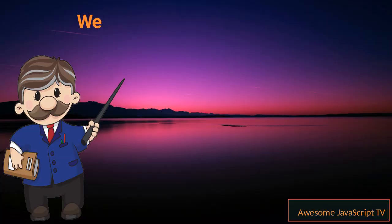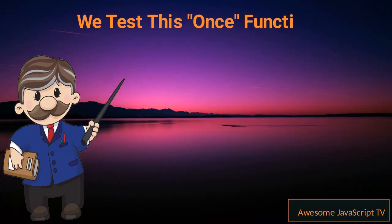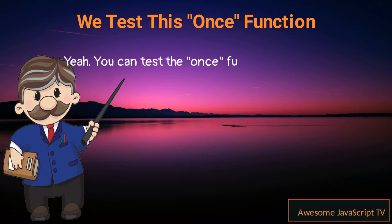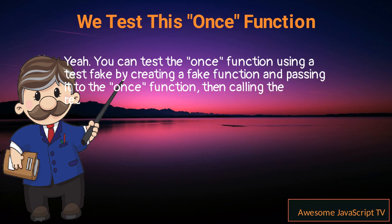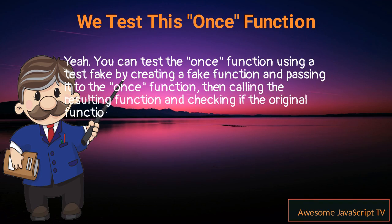You can test the once function using a test fake by creating a fake function and passing it to the once function, then calling the resulting function and checking if the original function was called using the called property of the fake.